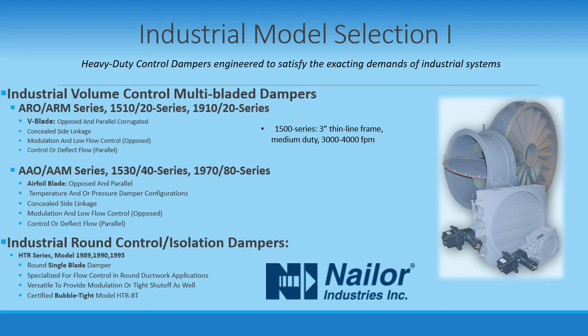Opposed blade action means that each adjacent blade moves in an opposite direction from the blade next to it, allowing for modulation of airflow as well as on-off operation. This allows for greater control and adjustment over the volume of airflow through the entire operating range. Common applications are fan discharge, power generation, air filtration, and process control. Lower leakage is attainable with opposed blade orientations since the blades overlap when closed and more torque is applied to the blades when closed as well.